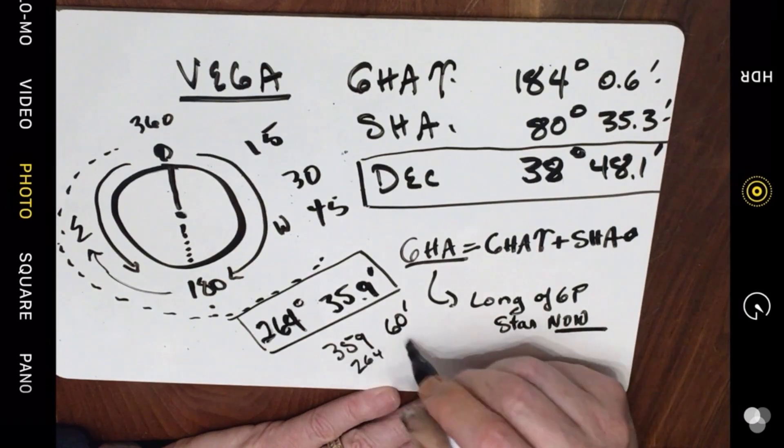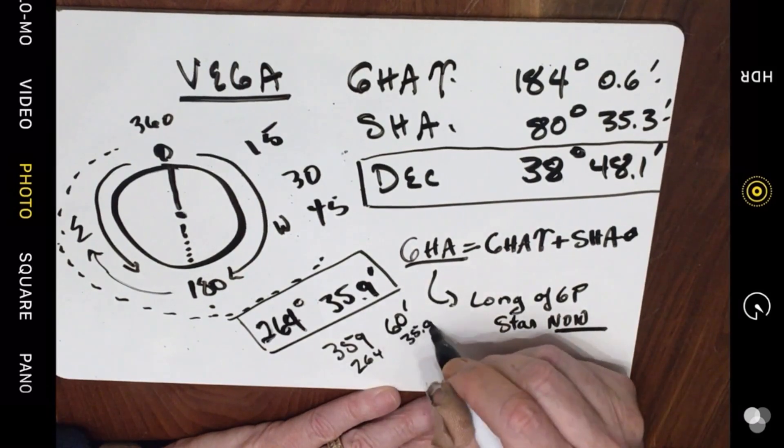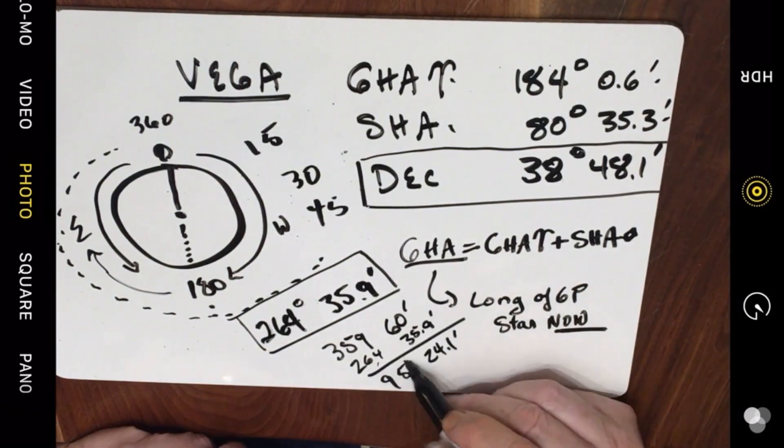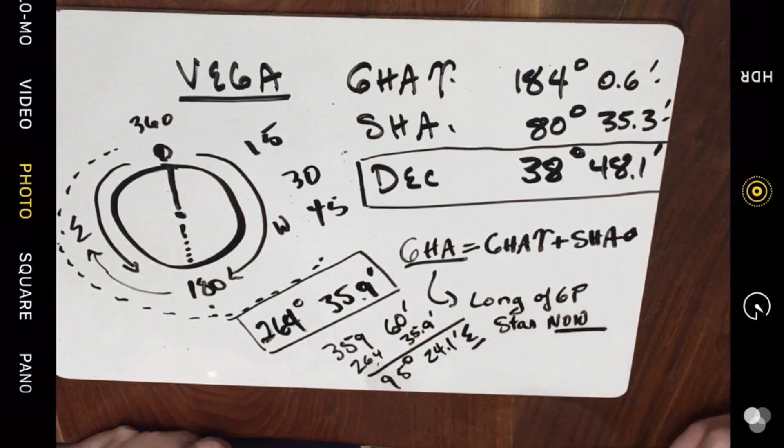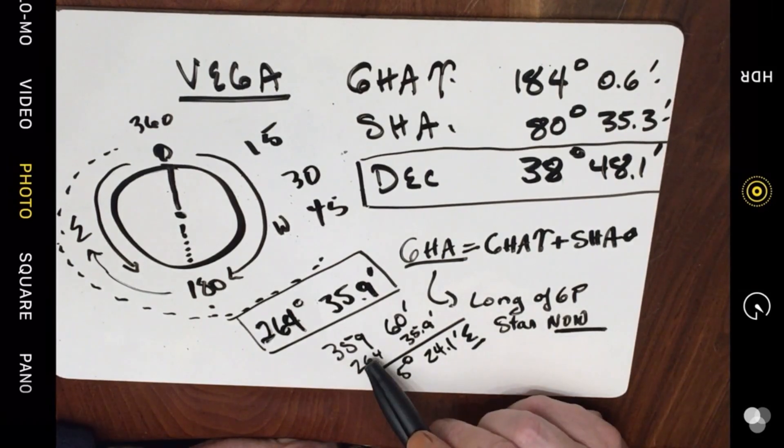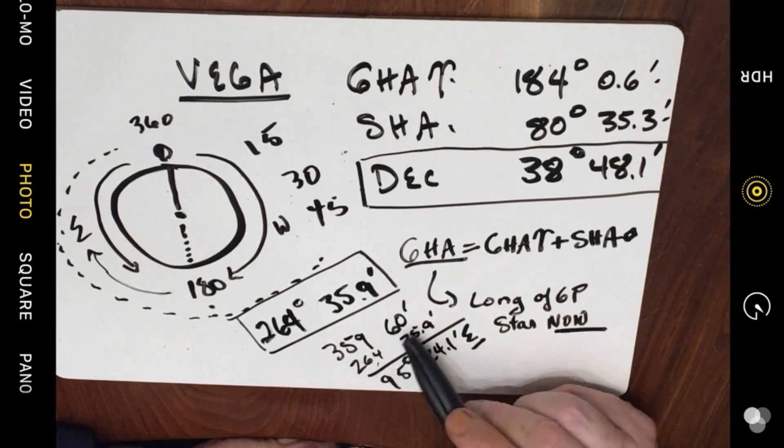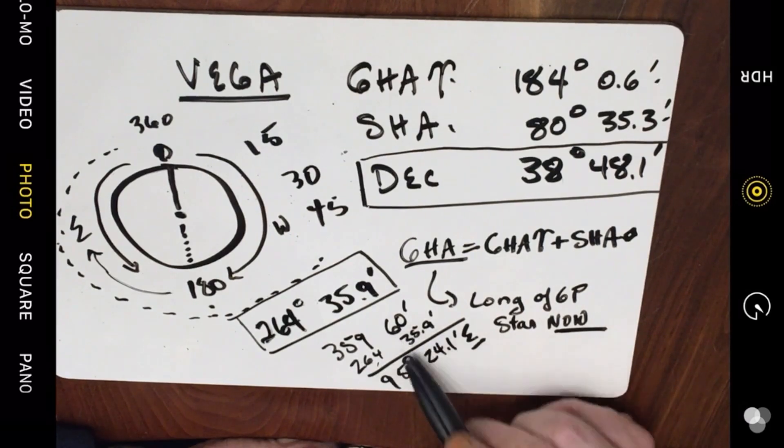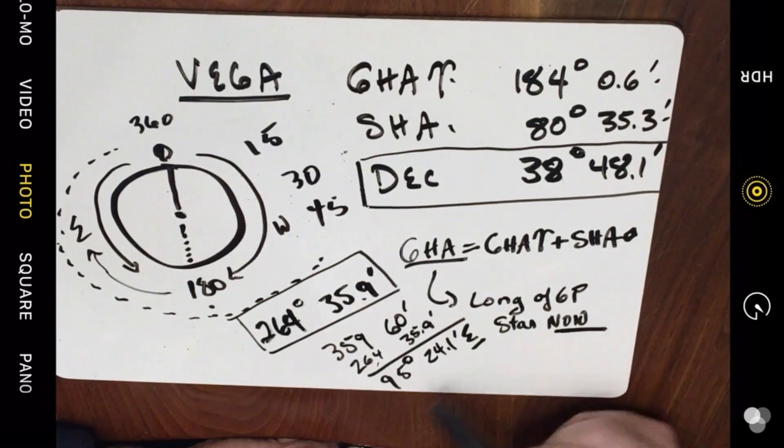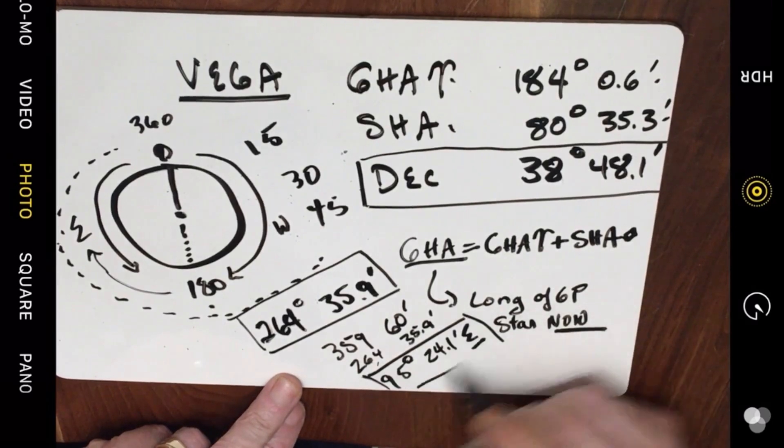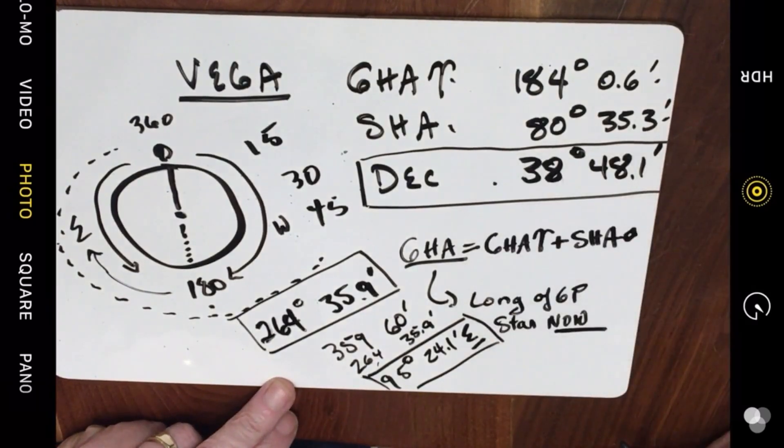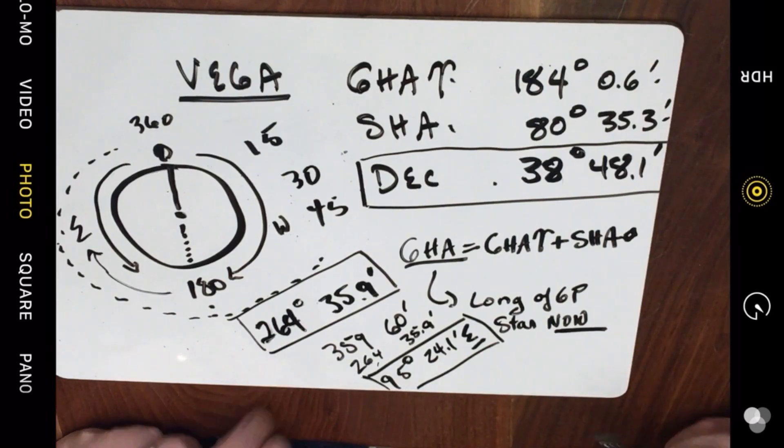So 264, 35.9 gives us 95 degrees 24.1 minutes east longitude. The reason we use 359 degrees 60 minutes, which is 360 degrees of course, is to just take care of the minutes on the number that we're subtracting from. It just makes it work out easier. So that would be our east longitude. Here would be our latitude and that's north latitude. That is the geographic position of our star.